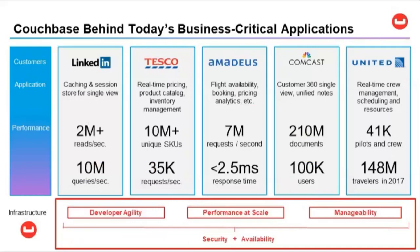Some examples of major enterprises adopting Couchbase include LinkedIn, Tesco, Amadeus, Comcast, and United. Couchbase is deployed in each of these instances because, unlike other NoSQL databases, Couchbase offers robust database capabilities on a highly scalable and available NoSQL platform. We've uniquely built it on top of open standards to simplify the transition for mainframe and relational databases. One common theme across these customers is the critical need for performance at scale.